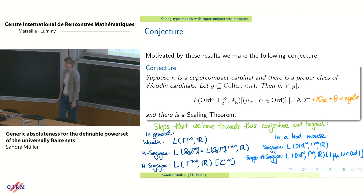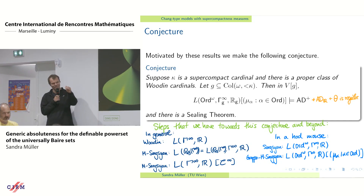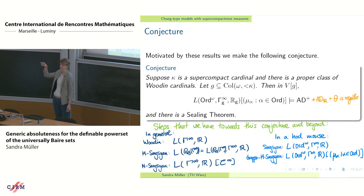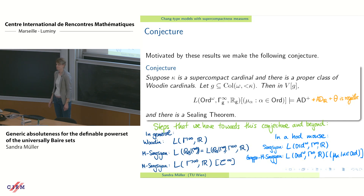Question: Could it be the case that some of these measures or ultrafilters appear if you cut off before — say you just had the measure for aleph_1 and you get the measure at aleph_2? Or do you really need to add all these filters? Answer: I don't know of a single result where you get it automatically in the setting. We work quite hard to add the measures. An interesting open question is whether you can show omega_1 is fully supercompact in such a model — for that you would need to add more measures or show there's more space between the theta of the model and the way you add the measures, but this seems to be a very hard question.